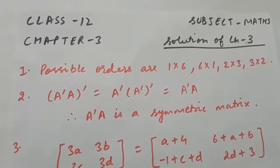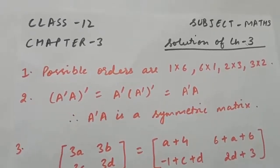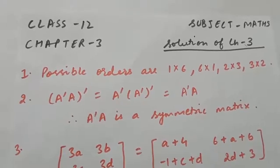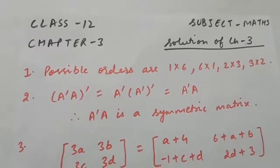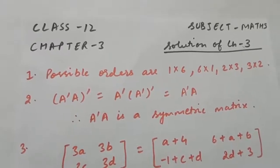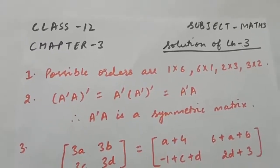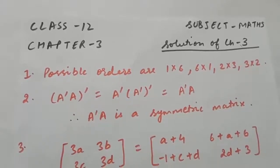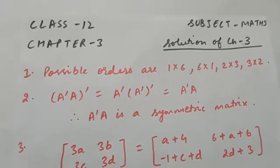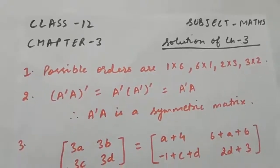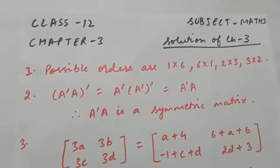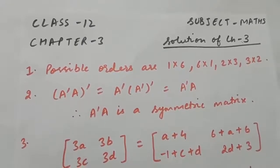Good morning students, this is class 12th maths, chapter 3rd. Today we will discuss the solutions of the test of chapter 3rd. Question first is: if a matrix has 6 elements, then what are the possible orders it can have?